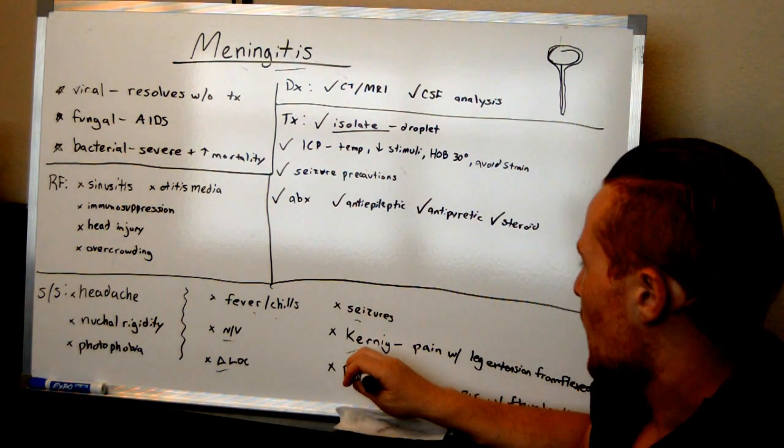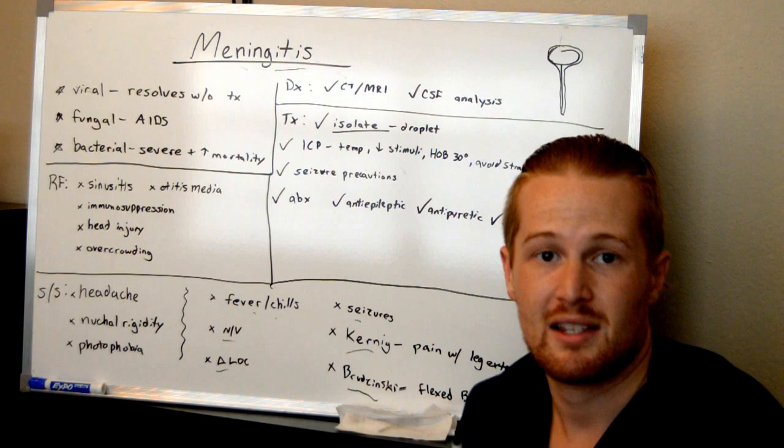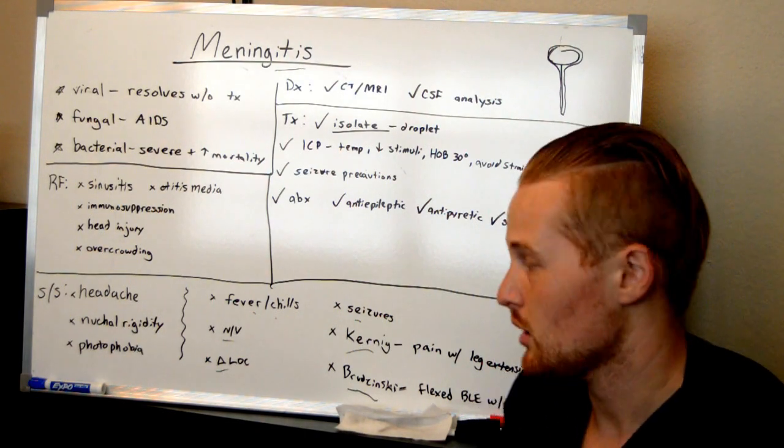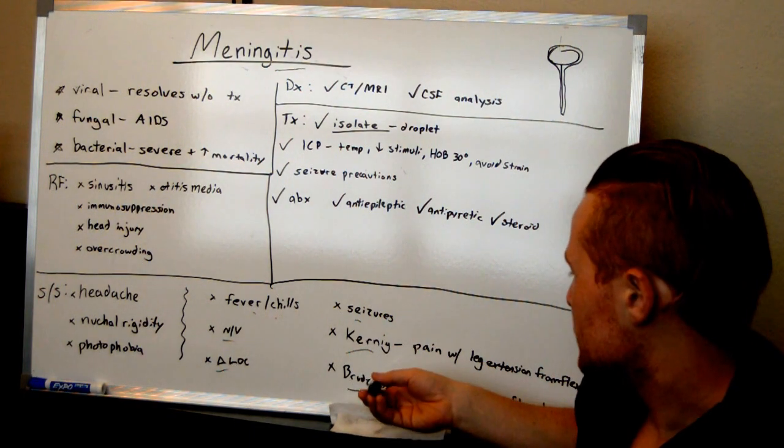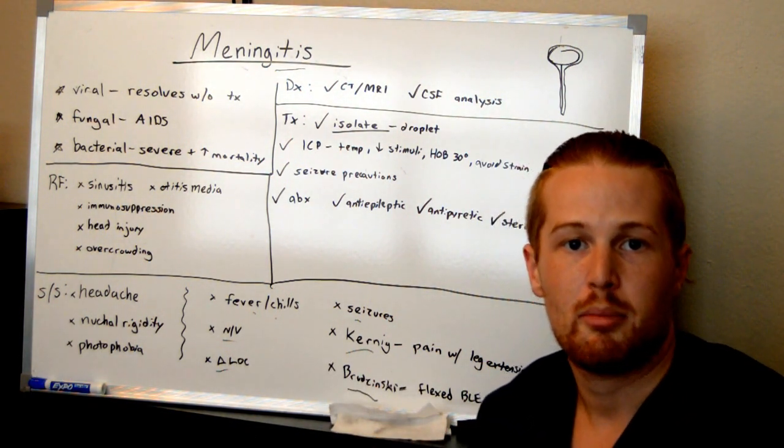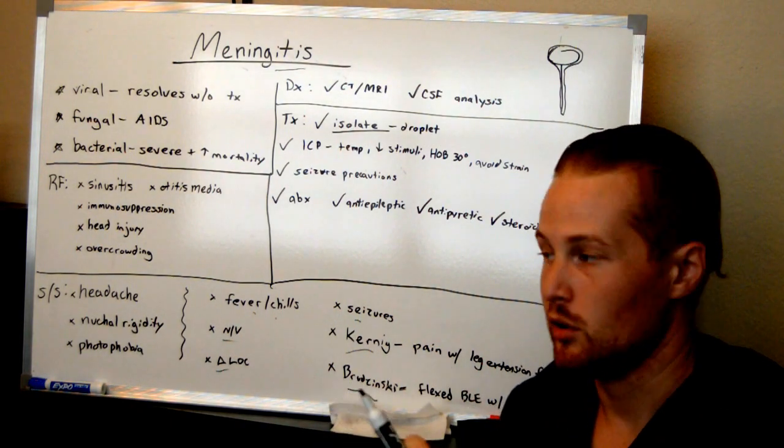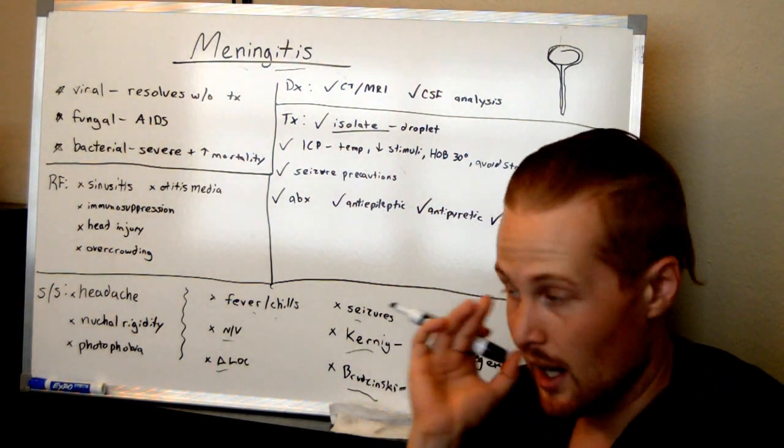And then you've got these two signs. And teachers love to talk about these signs because it has a name to it. I haven't actually seen any of these on the tests, but you've got the Kernig sign and the Brudzinski sign. Just go to Google Images and look those up, and you can see what those are. But it has to do with problems with bending the neck.